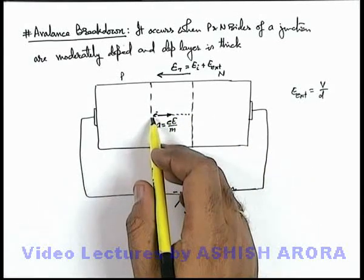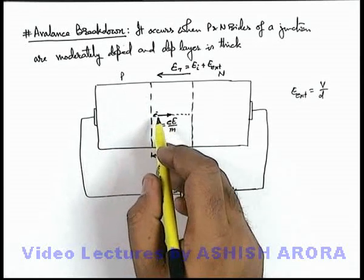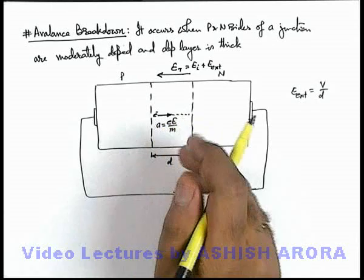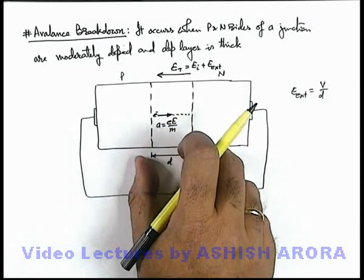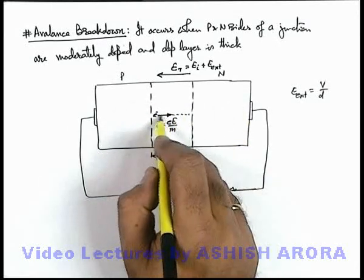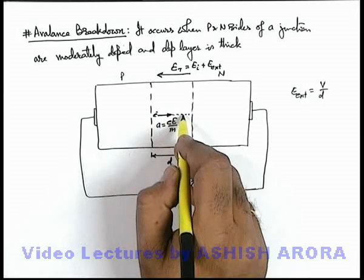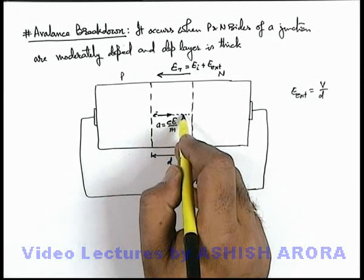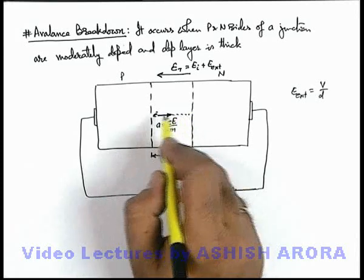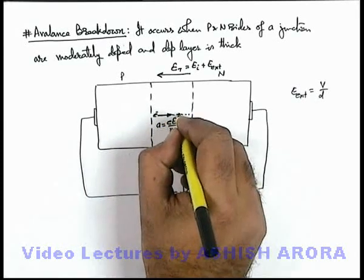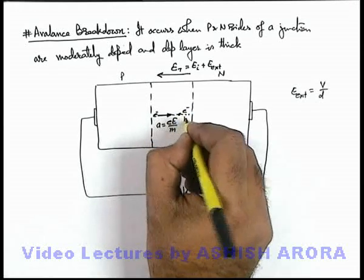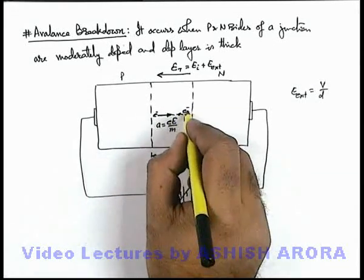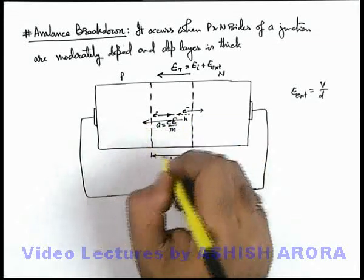And when these electrons from p side, which are actually the minority carriers of p side, will be accelerated to very high speed, and as width of depletion layer is large, in between if these electrons will collide with any of the electrons in the valence band of covalent bond of intrinsic semiconductor, these will attain so high energy that due to its collision an electron hole pair is generated. And once electron hole pair is generated these will start drifting in the opposite direction.